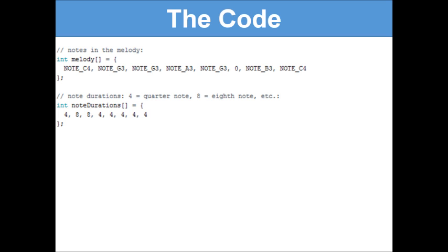The first line of code is int melody. We've just declared an integer variable and we're going to call it melody. And then we are saying that melody is NOTE_C4, NOTE_G3, NOTE_G3, NOTE_A3, NOTE_G3, NOTE_B3, NOTE_C4.